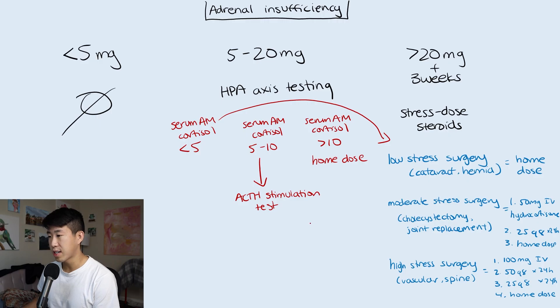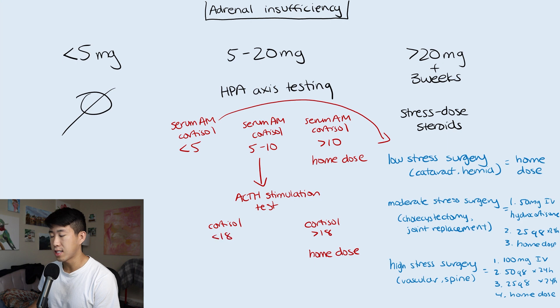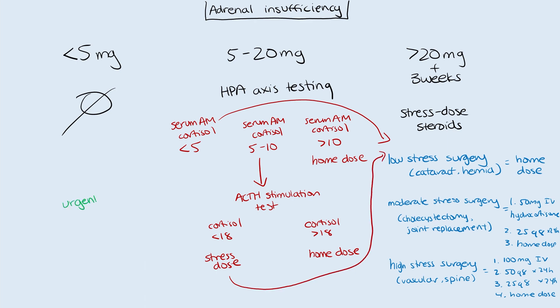For the cosyntropin stimulation test, you give cosyntropin — an analog of ACTH — then recheck cortisol 30 minutes and one hour after. If cortisol is greater than 18, they are not adrenally suppressed and can continue their home dose. If cortisol is less than 18, give stress dose steroids. If the patient needs urgent surgery at any point, just empirically give stress dose steroids, since there's no time for HPA axis testing.